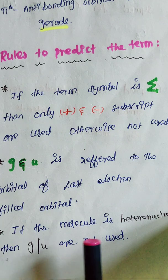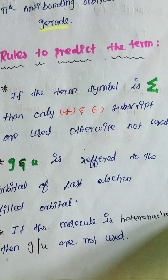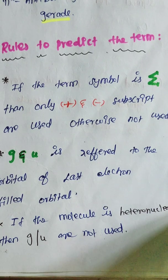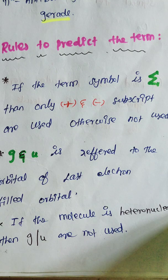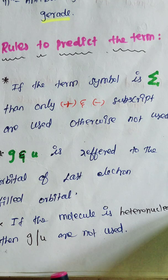The third rule: if the molecule is heteronuclear diatomic, then gerade or ungerade are not used. For example, NO and CO are heteronuclear diatomic molecules — for these we do not mention gerade or ungerade. But for homonuclear diatomic molecules such as H2, N2, and C2, we do mention gerade and ungerade.